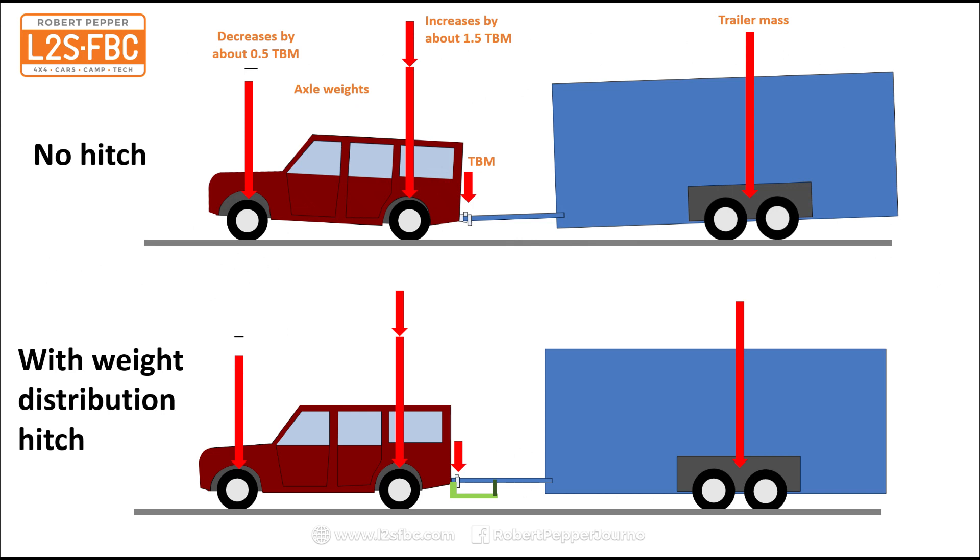Now if we add in the effect of the weight distribution hitch, this happens: we significantly reduce weight on the rear axle, we add weight to the front axle but not as much as it was originally, and we also add weight to the trailer axle as well.